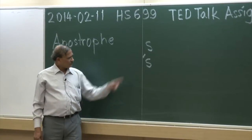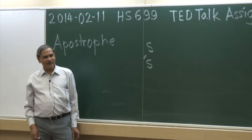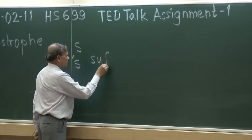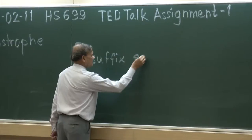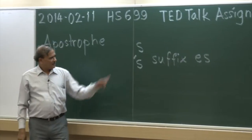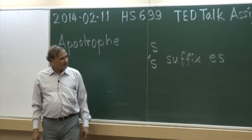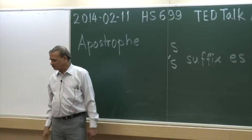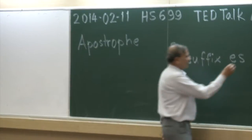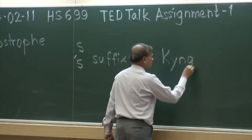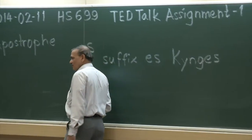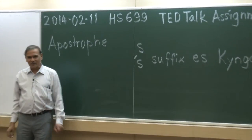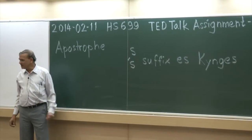For the possessive case, the apostrophe also indicates that something has been dropped. Historically, the suffix for the possessive case was 'ES.' It has become shortened to 'S.' The old spelling of 'king' was K-Y-N-G and it was written as K-Y-N-G-E-S. When this E was dropped, the apostrophe came in to indicate that the E had been dropped, and it has remained historically.